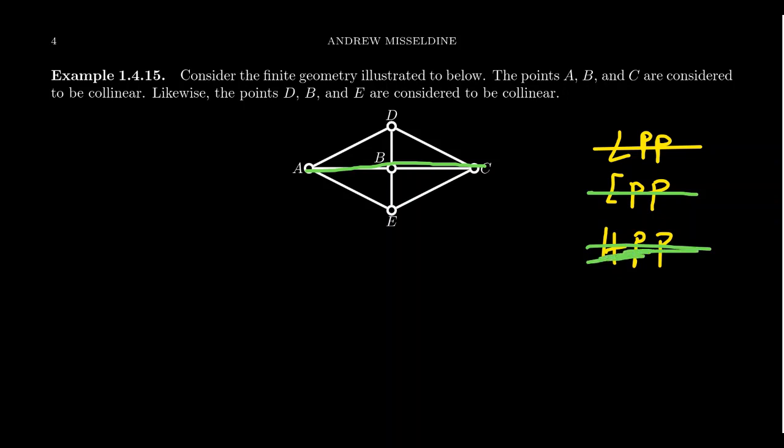But the point is, if locally it's elliptic, but locally at a different place, at a different locale, it's Euclidean. That means it's not Euclidean. It's not elliptic.